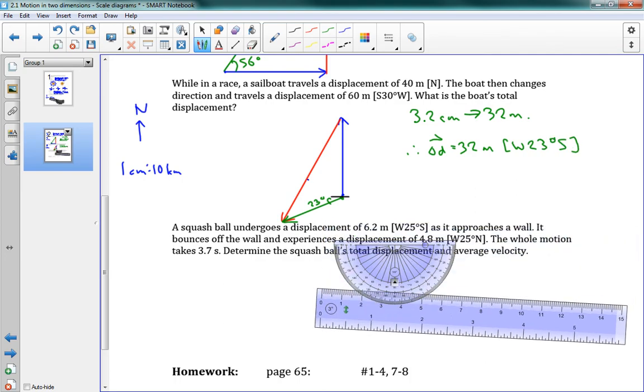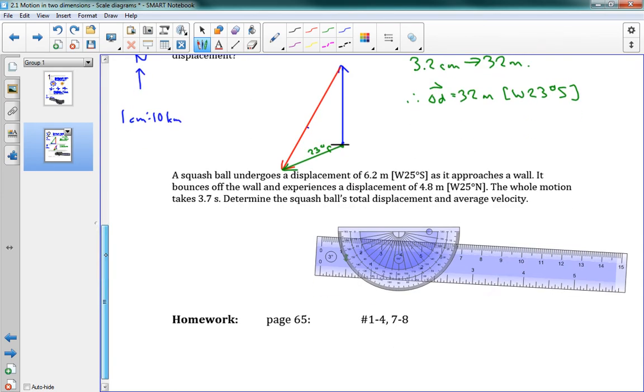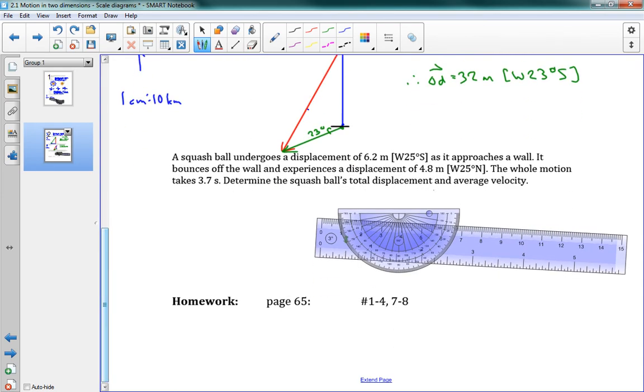There's one more problem there, and I'm going to leave that one for you to try doing. It says the squash ball goes from a displacement of 6.2 meters west 25 south, bounces off, and another displacement 4.8 west 25 north. What you're going to do is find the total displacement, just like we've been doing above, and then the average velocity by dividing by time. Go ahead and try that problem, and you'll have time in class for the homework problems. I'll see you in the next lesson.